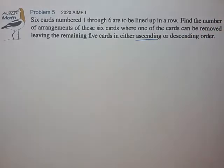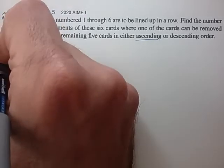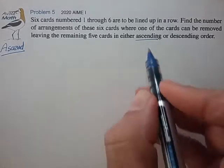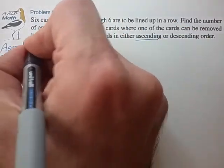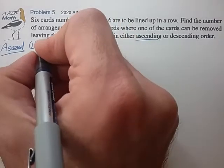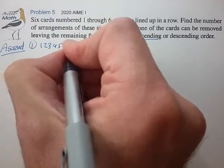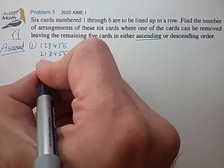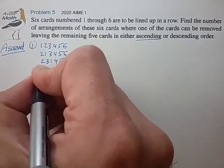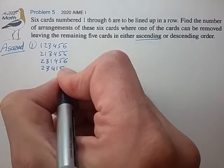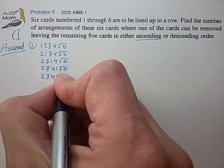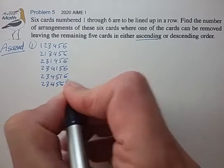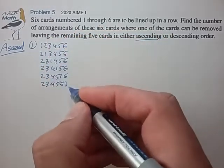Let's look at the ascending card order first. If the card we're going to remove is card number 1, then the possible arrangements are: 1,2,3,4,5,6 — and we move the 1 over to each of the six positions. So we have six possible arrangements if we're going to remove card number 1.